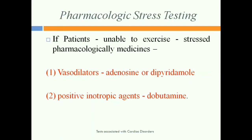Instead of exercise, certain drugs are used to induce this stress. The drugs used are vasodilators such as adenosine and dipyridamole, and positive inotropic agents such as dobutamine. Vasodilators cause vasodilation of the arteries, while positive inotropic agents like dobutamine increase the heart rate and blood flow of the heart.